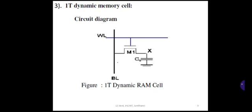When WL is high, transistor M1 is turned on. If the BL line is 1, the capacitor CG stores a 1 through transistor M1. If the BL line is 0, the capacitor charge is 0. This is how the write operation is performed.